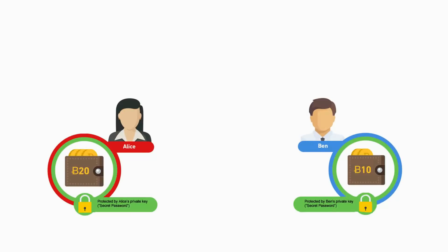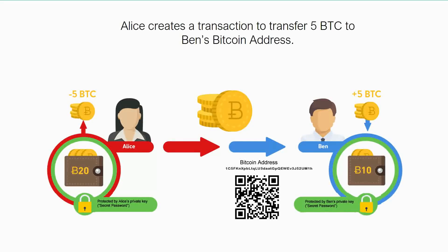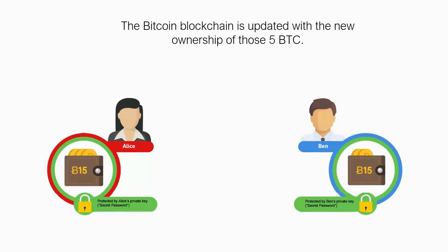In order for Alice to transfer the five bitcoins to Ben, Ben needs to share with her his Bitcoin address. His Bitcoin address is a hashed version of his public key. Upon receiving the Bitcoin address, Alice creates a transaction to transfer five bitcoins to Ben's Bitcoin address. After the transaction is complete, the Bitcoin blockchain is updated with the new ownership of those five bitcoins.